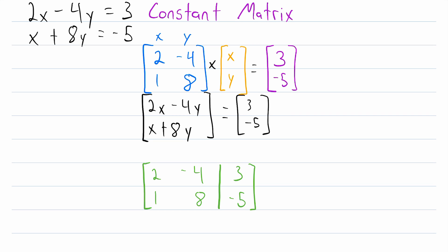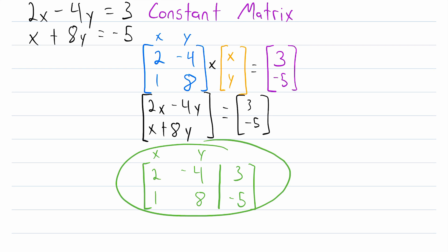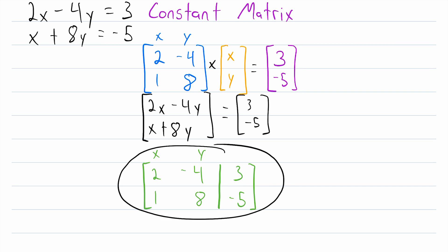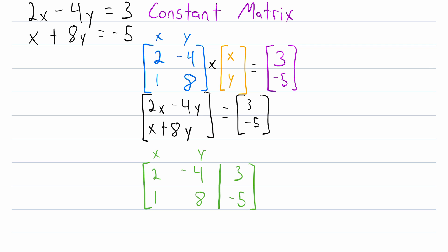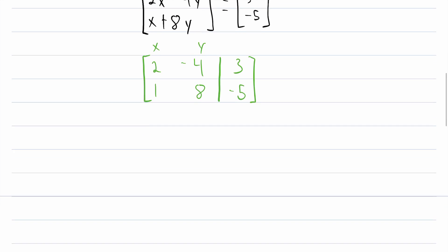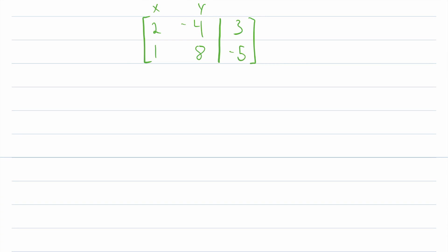This works really nicely so we can clearly see that these over here are the coefficients of x and y, and then these are the constants. You can think of this vertical line as an equals sign. The great value of this is that we can then do what are called row operations on this single matrix in order to solve the system of linear equations that it represents.